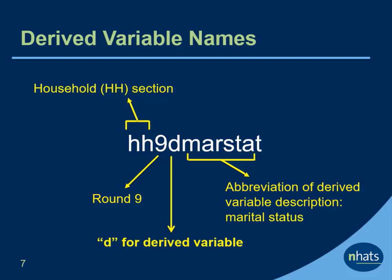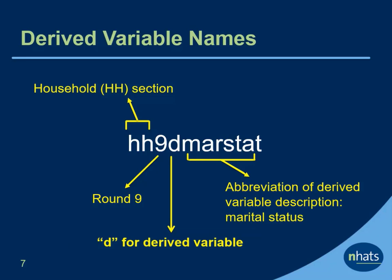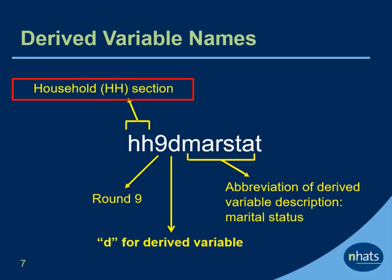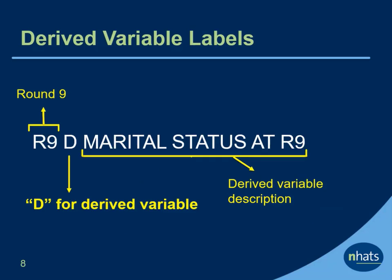A list of derived variables can be found in the appendix to the NHATS user guide. For each derived variable, the appendix catalogs how the derived variable was constructed, its values, and value labels. Derived variables have the same naming conventions as other variables, but a D is included after the round number. For example, HH9DMarStat is a round 9 derived variable from the household or HH section that indicates the current marital status. The appendix indicates that this variable combines information from prior and current round marital status items. Derived variable labels include the same information as variable labels, but have a D after the round number.